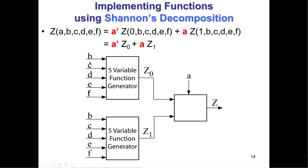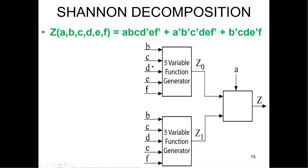Shannon's decomposition — you should kind of remember that. You can divide any six-variable function into two five-variable functions: one multiplied by A prime, one plus A. You just factor out one of the variables, giving you one where A is considered zero and one where A is considered one, then combine those to generate the next value of Z.